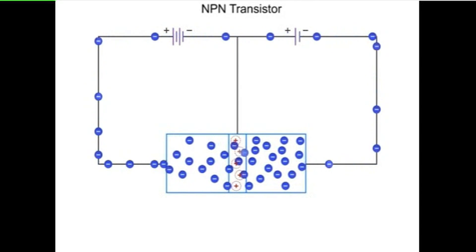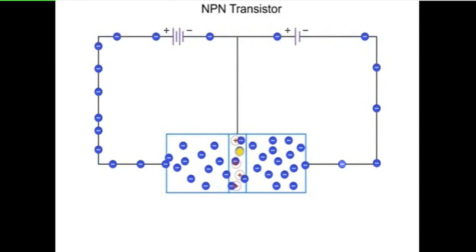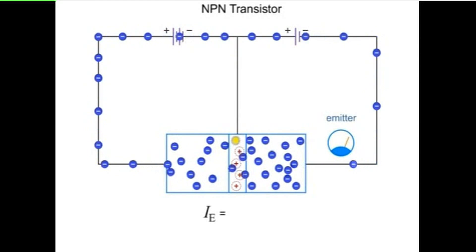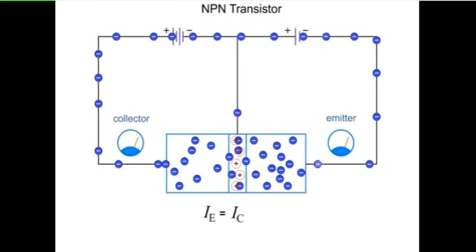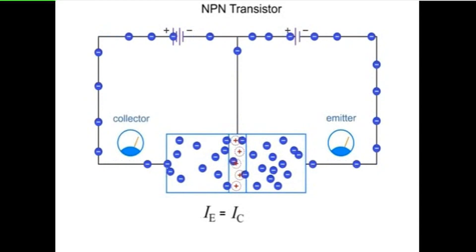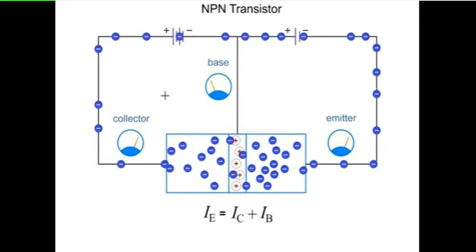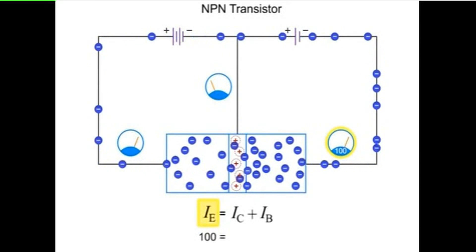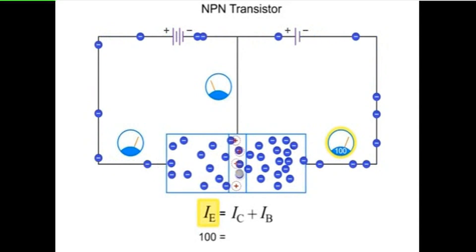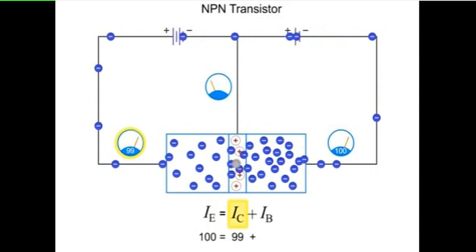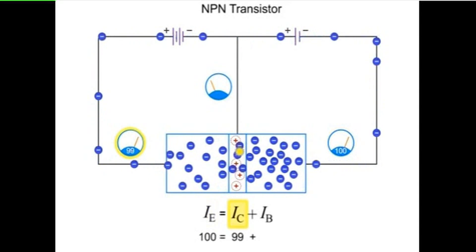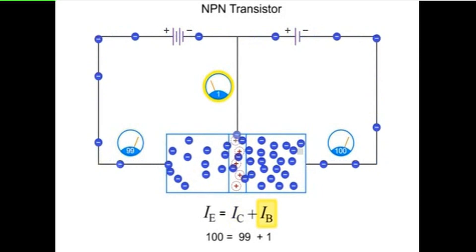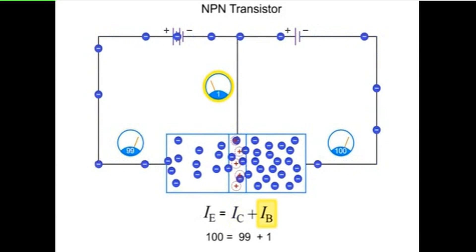In an NPN transistor, the emitter current is the sum of the collector current plus the base current. So, if you have 100 milliamps at the emitter, you will have 99 milliamps at the collector and 1 milliamp at the base.